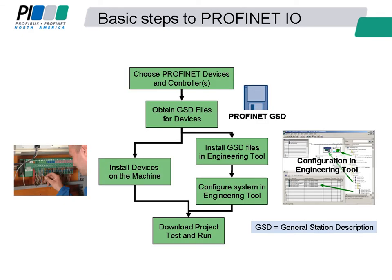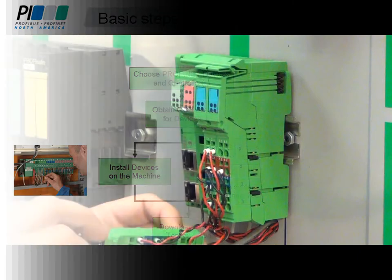The basic steps for configuration of Profinet I.O. devices are shown here. Mainly, you will need to wire the device for operation and to configure it with your Profinet engineering tool. In the engineering tool, you will set device settings and put the I.O. device into operation with your I.O. controller by downloading the configuration.